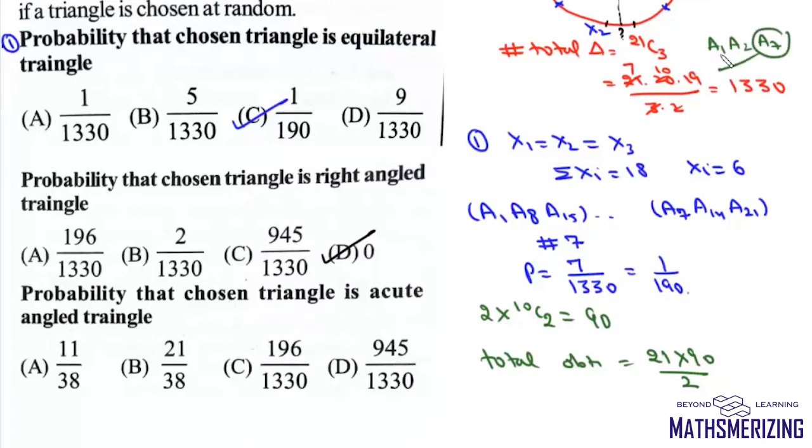there also we will have this case where we will have a1, a2 and a7. With a2 it is not possible because for a2, a1 and a7, they lie on the opposite side. So therefore we have to divide it by 2. So we will get 21 into 45, which is 945.